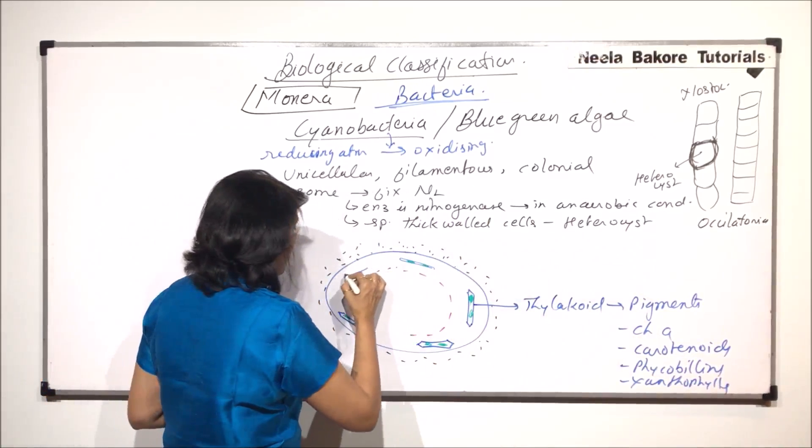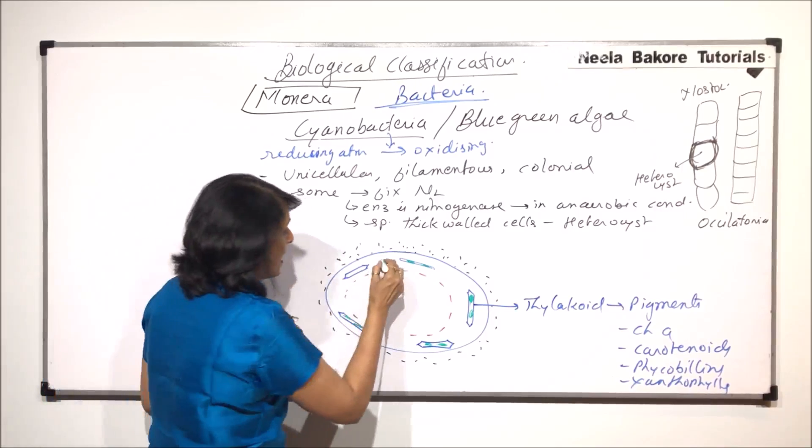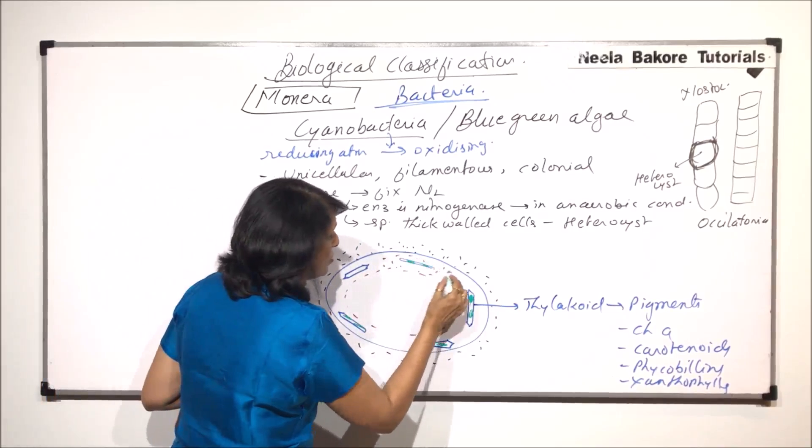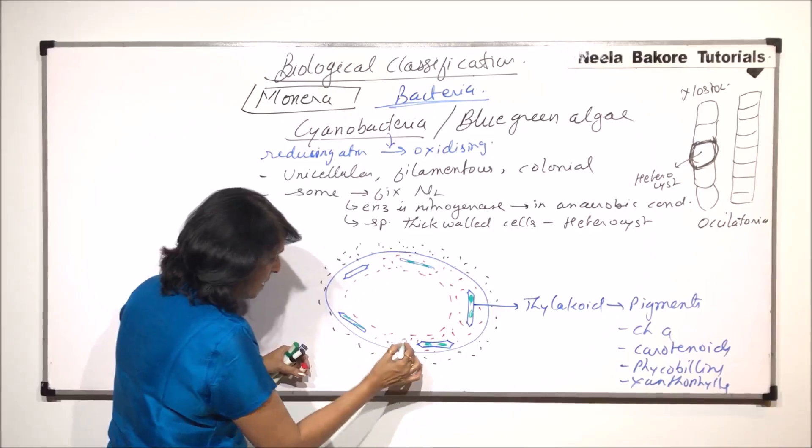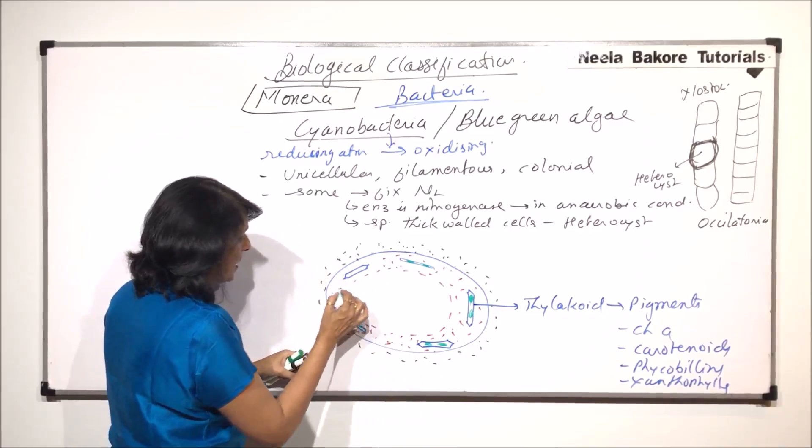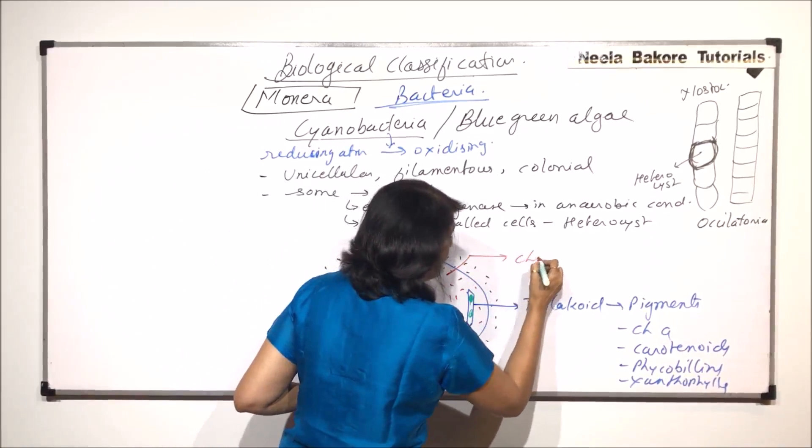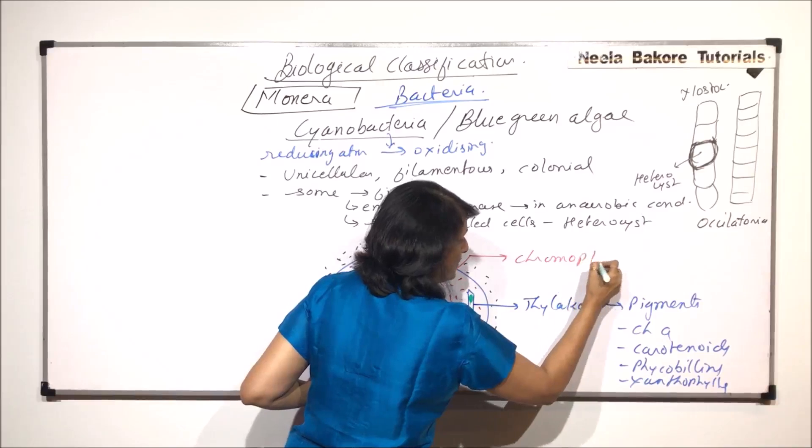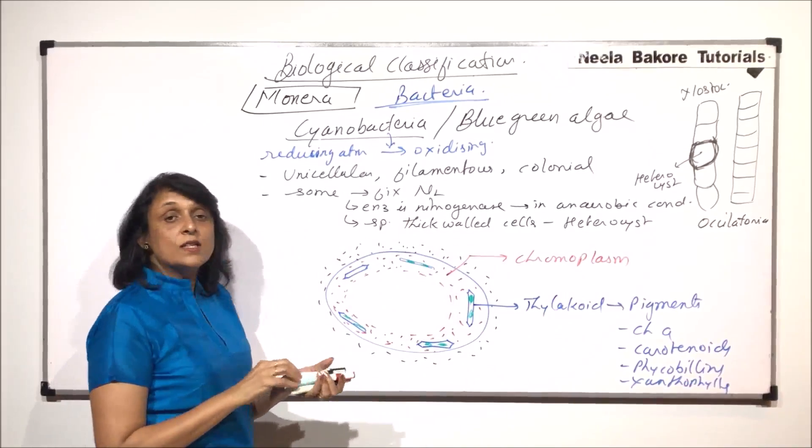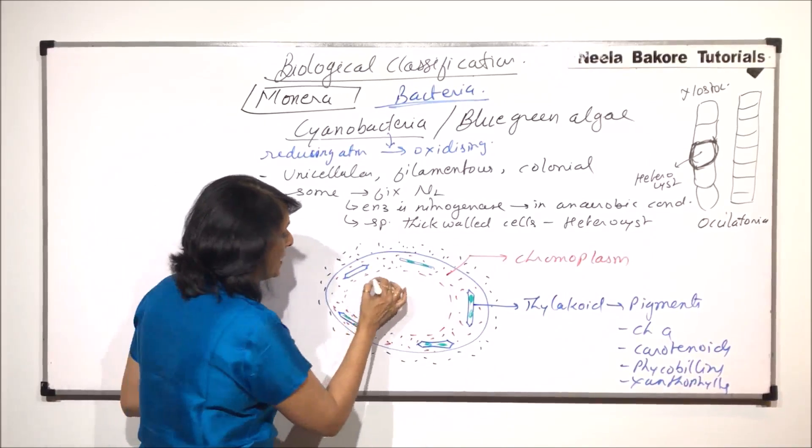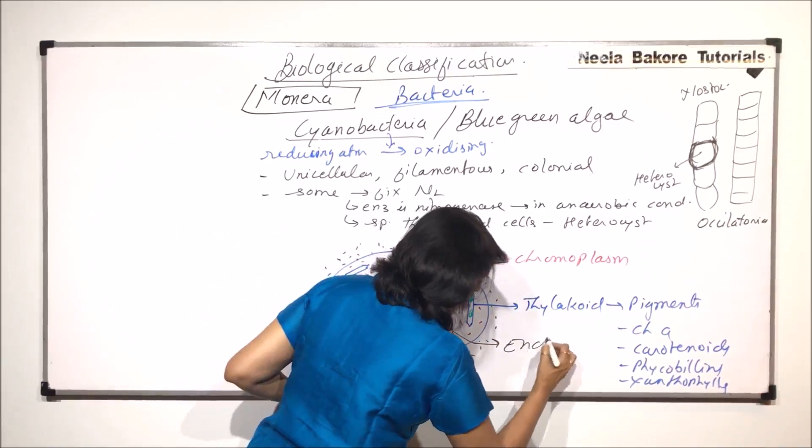Because of these pigments, the outer cytoplasm, this outer one, starts to appear colored. These pigments are responsible for giving this color to this outer cytoplasm and that is why it is known as chromoplasm. The inner cytoplasmic material is clear because there is no thylakoid, no pigment here. This is the clear cytoplasm which is known as the centroplasm.